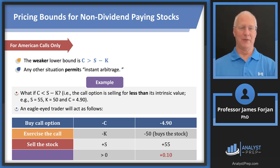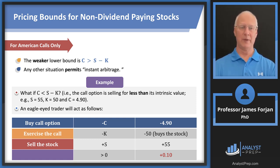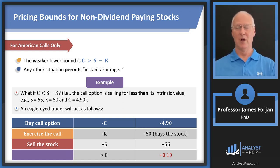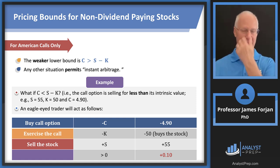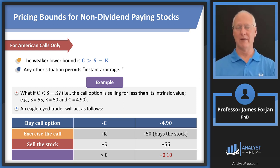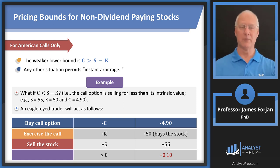Any other situation permits an instant arbitrage. In the middle column example, we get $0.10 no matter what happens. If that call option is selling for less than its intrinsic value — say $4.90 when the stock is $55 and exercise is $50 — there's no way the writer of an option would ever do that. No financial institution is going to lose $0.10 per option, especially when you could buy a trillion of them.